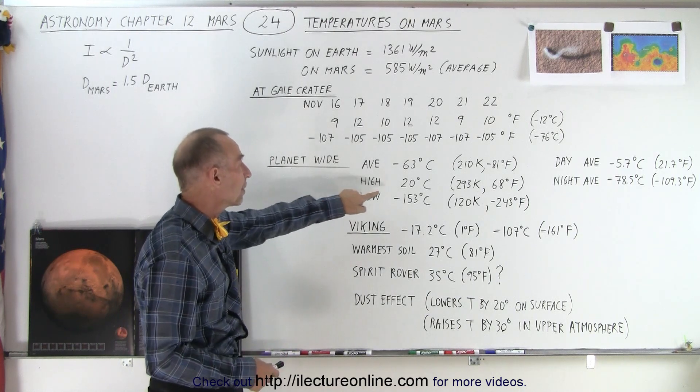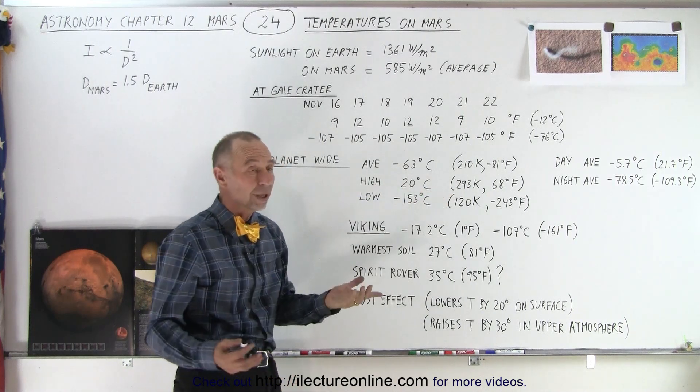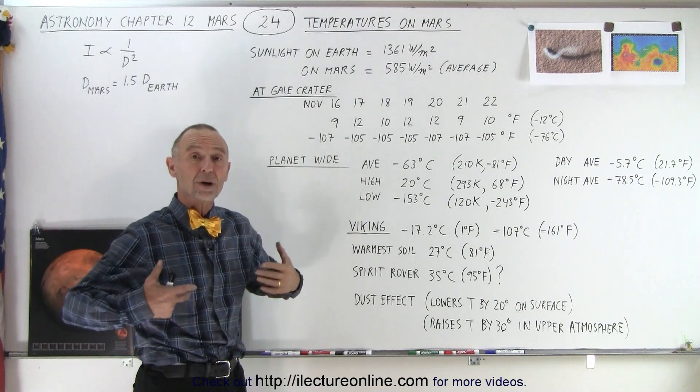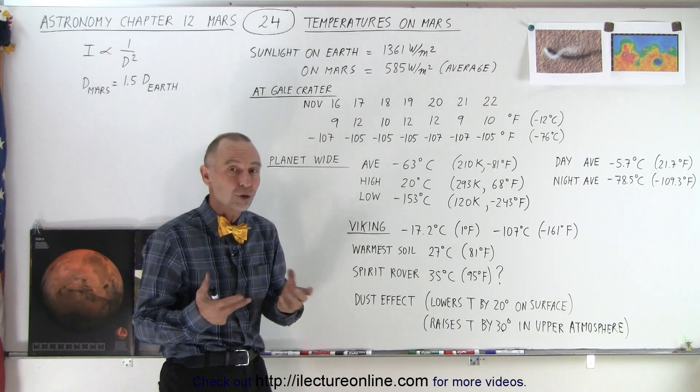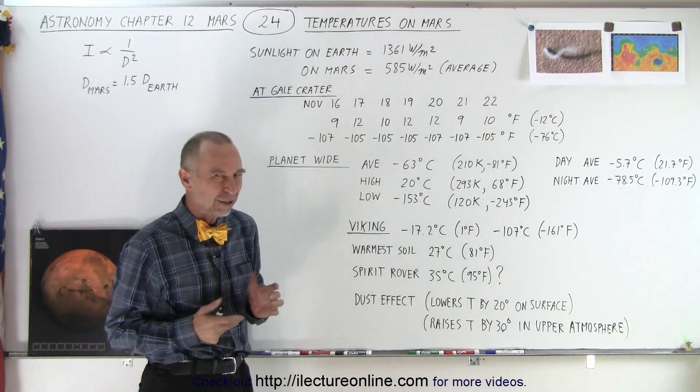The high at the equator in the summertime can be as much as 20 degrees centigrade—that's about 68 Fahrenheit, 293 Kelvin. You might think, wow, that's almost warm enough to walk around in a t-shirt. Not quite. Let's say you could walk around in clothes with some breathing mechanism, that you didn't need a space suit.